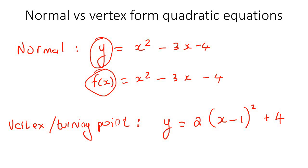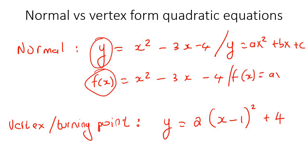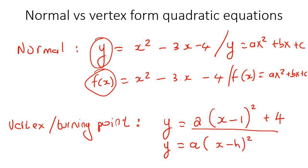If we look at the general formula for the normal form, it would be y equals ax squared plus bx plus c — or f of x equals ax squared plus bx plus c. And then for the vertex form, the general formula that most teachers use would be y equals a times (x minus h) squared plus k. These are the two main formula methods — it's the same thing, just written in two different ways.